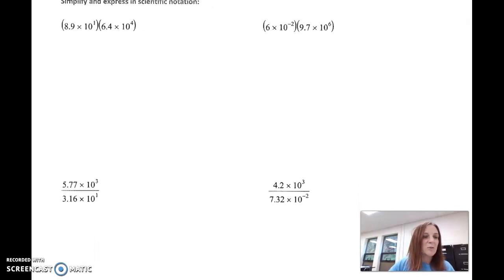So let's just jump right in and do some examples. This first one here, we have a number in scientific notation: 8.9 times 10 to the first, times 6.4 times 10 to the fourth. I want you to realize this is all multiplying.